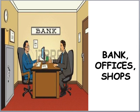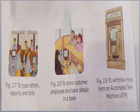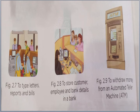The next place is banks, offices and shops. These are places where computers are being used. To type letters, reports and bills — agar hum kisi bhi shop pe shopping kar rahe hain, jaise kisi ne 50 things buy ki hain, so it would be very difficult for the shopkeeper to write all 50 items and their amounts manually. But with the help of the computer, it takes only a second — poore ke poore items ka bill ban ke saamne aa jaata hai. So computers are used at shops for billing purposes.